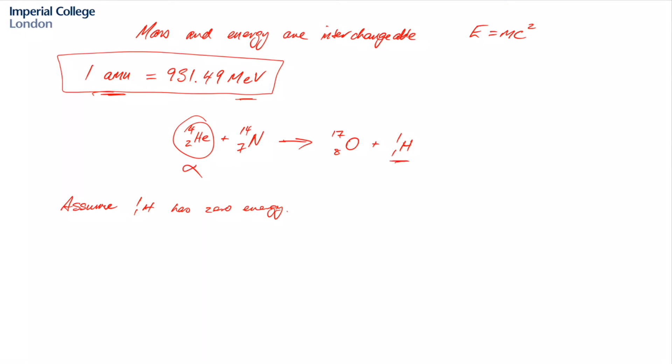So all we need to do is do an energy balance. So we have one of each of these species, so we don't have to multiply the masses by anything. So we can just calculate the mass difference between the products minus the reactants. And so if we substitute in our numbers, we have 16.999132 plus 1.007825 minus 14.003074 minus 4.002603 and the answer is negative 1.28 by 10 to the minus 3 atomic mass units.